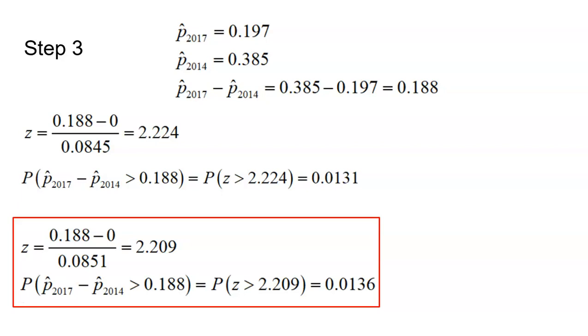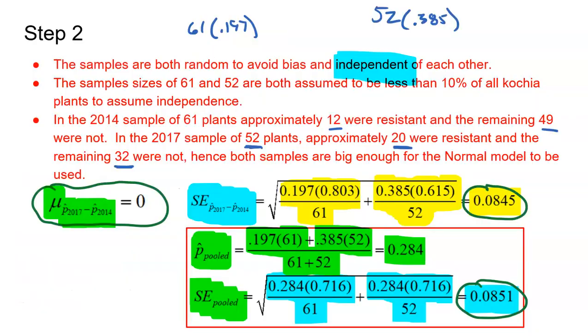Step three is my work. I'm identifying the two proportions from 2017 to 2014, which means I observed that 0.188 difference. Is that difference significant? I got to find my Z score. I take that difference and subtract zero, because the null was that there was no difference, and I divide by my standard error. Here, I'm dividing by the standard error unpooled. Here, I'm dividing by the standard error that was pooled.